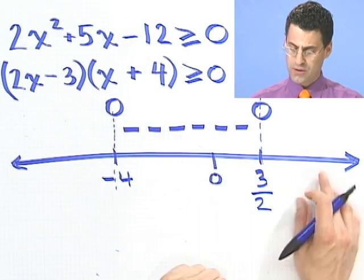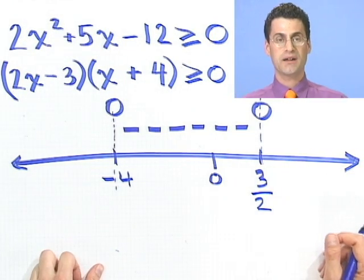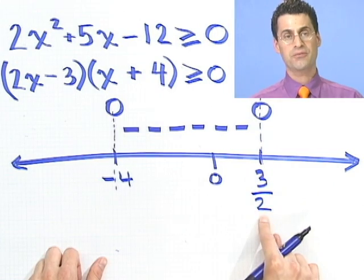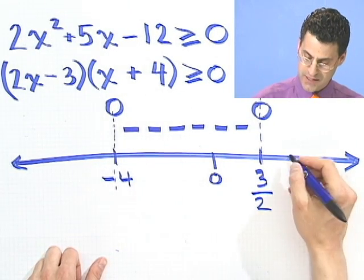Okay. Now what would I do over here in this region? Well, again, I'd pick a point. I could pick any point at all. It doesn't matter. Let's see. 3 halves is 1 and 1 half. I need something bigger than that. How about if I just pick 2?